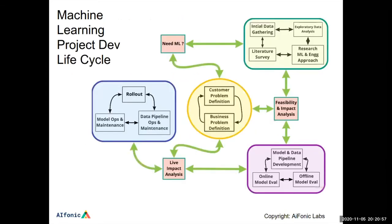Once you've defined the problem, you first need to determine whether you require machine learning to solve it. Not all problems require ML, and it's okay to solve without it. Sometimes you can come up with a non-ML solution first and add ML later. If you determine ML is needed, the next step is to figure out what can be done — you gather data, thinking about various data sources. This need not be all the data you'll ever need; a small subset to start playing and getting initial insights is fine, then iterate.